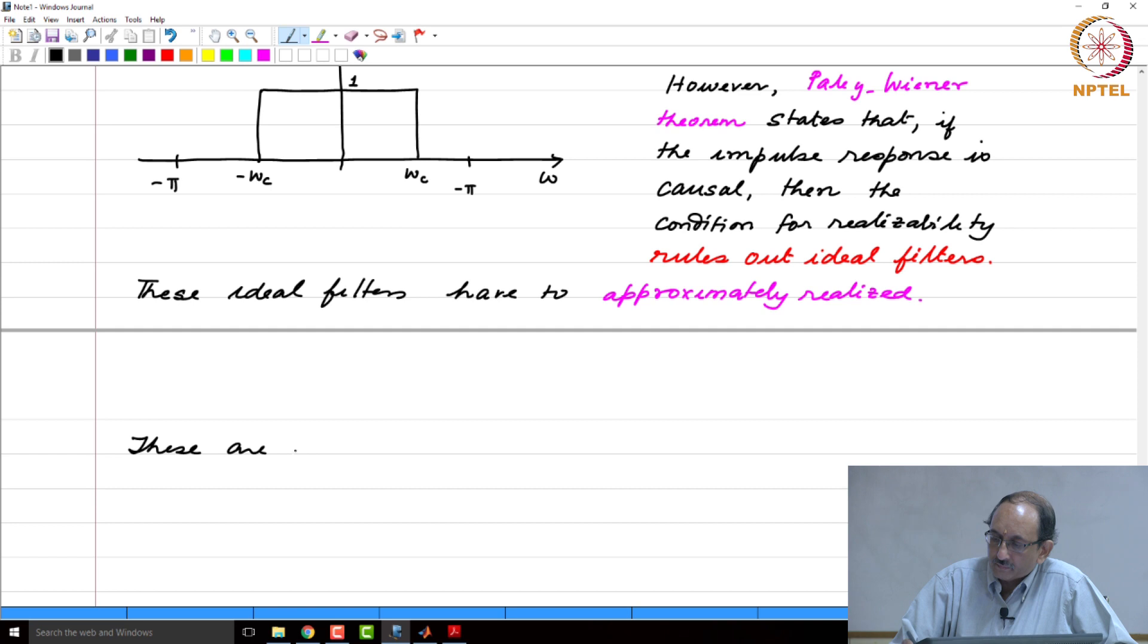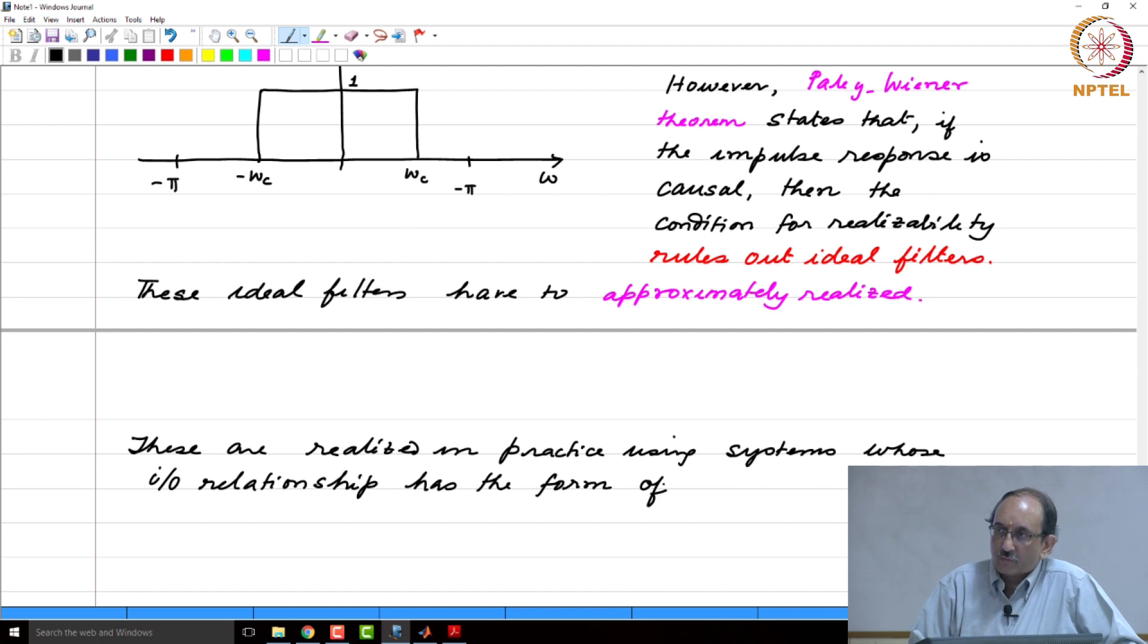And these are realized in practice, using systems whose input-output relationship has the form of, if you want to guess what would the IO relationship be, in what form? What is the general class that this has to belong to? Rational or in the time domain, we are talking about input-output relationship. Therefore, it has to be of the form of an LCCDE.